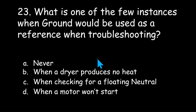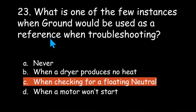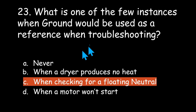Number 23: what is one of the few instances when ground would be used as a reference when troubleshooting? Never, when a dryer produces no heat, when checking for a floating neutral, or when a motor won't start? Generally you don't want to use ground because it's not part of any circuit in the dryer. However, when checking for a floating neutral, you can check for the voltage difference between neutral and ground. If you have any voltage over a couple of volts at the power source between neutral and ground, you likely have a floating or loose neutral.